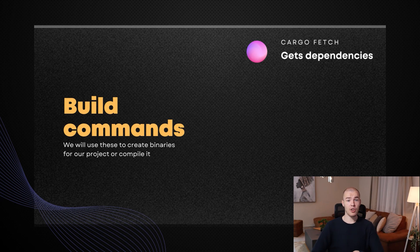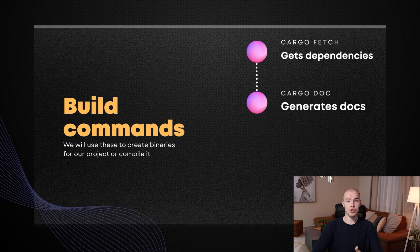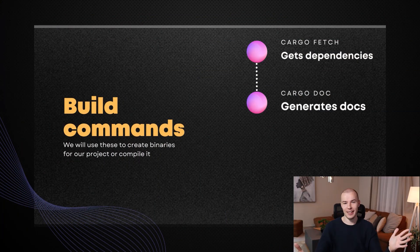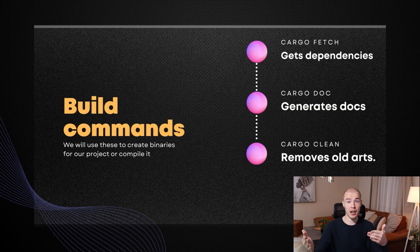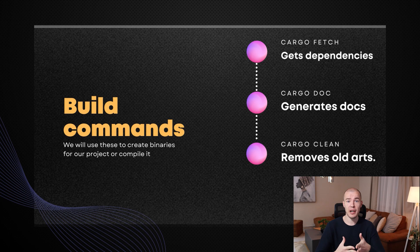Right after that, we have the cargo doc command, and this one is generating documentation for our entire project for us. Yes, Rust has a default automated documentation generation tool — that was a mouthful, definitely. And finally, we have the cargo clean command, which is used to remove all of our artifacts from the project. Artifacts are the project's executable files. So basically, after running cargo clean, you will be left without all the executables that were created by running cargo build or cargo run.